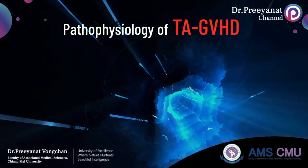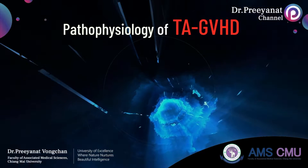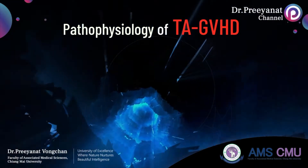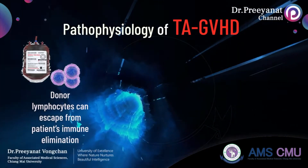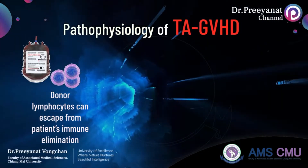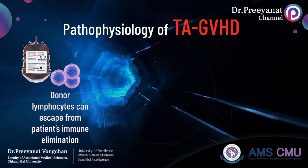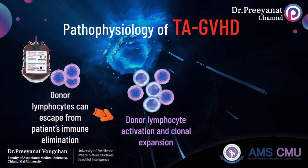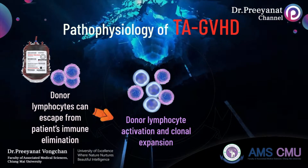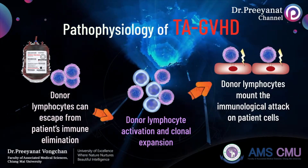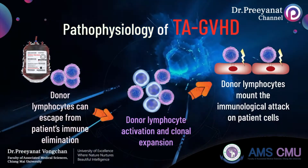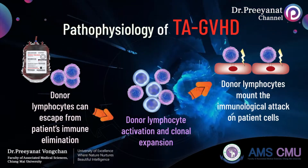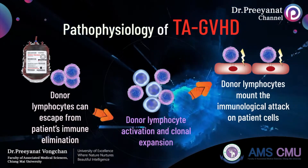The pathophysiology of transfusion-associated graft-versus-host disease is complex and incompletely understood. Key mechanisms include the escape of donor T lymphocytes present in blood components from immune clearance in patients, and subsequently clonal expansion of these cells, with immune-mediated destruction of host tissues, resulting in various clinical manifestations. The key point is the difference in HLA phenotype between donor and patient.